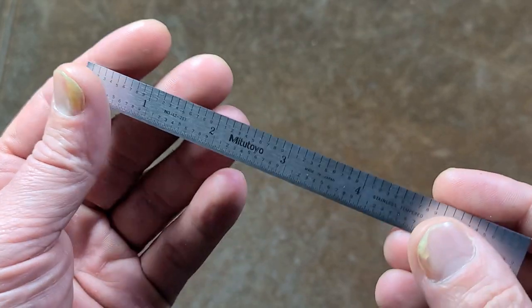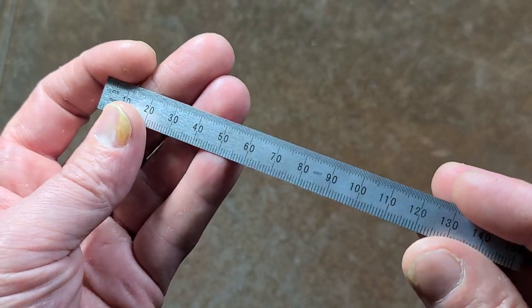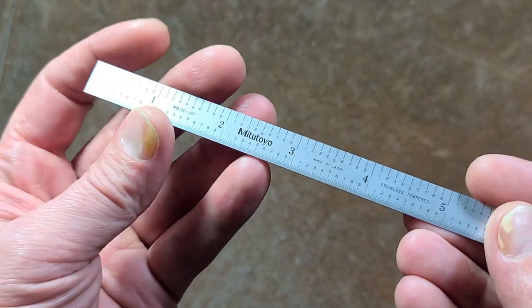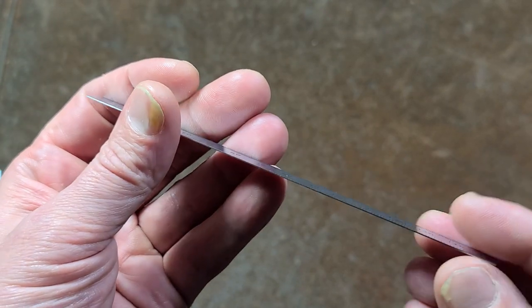These are sometimes called flexible rules, and I picked up this Mitutoyo because it was both metric and imperial in the same rule.